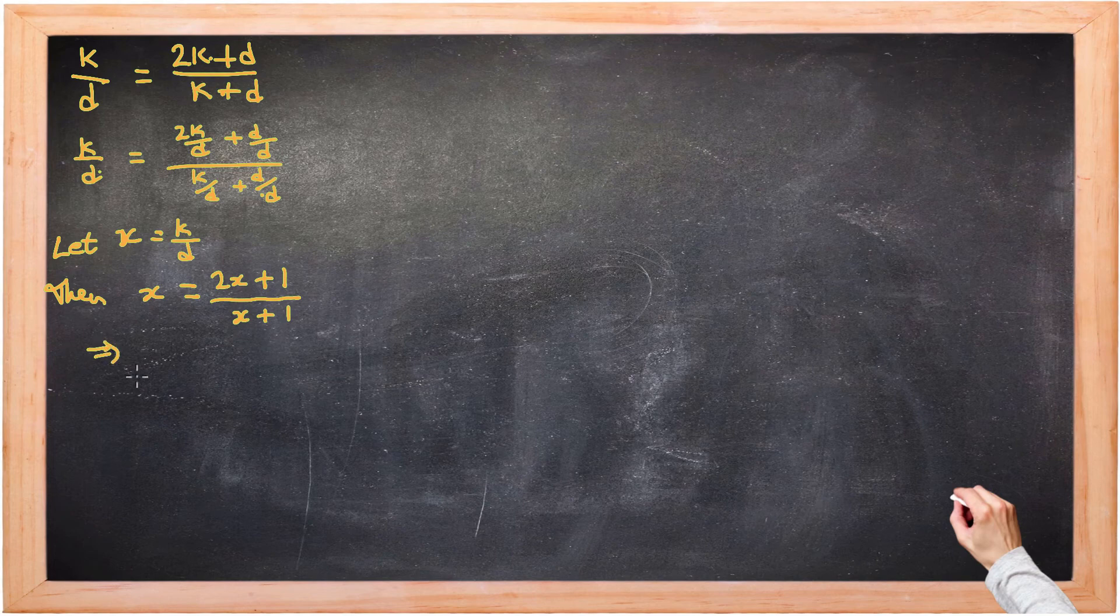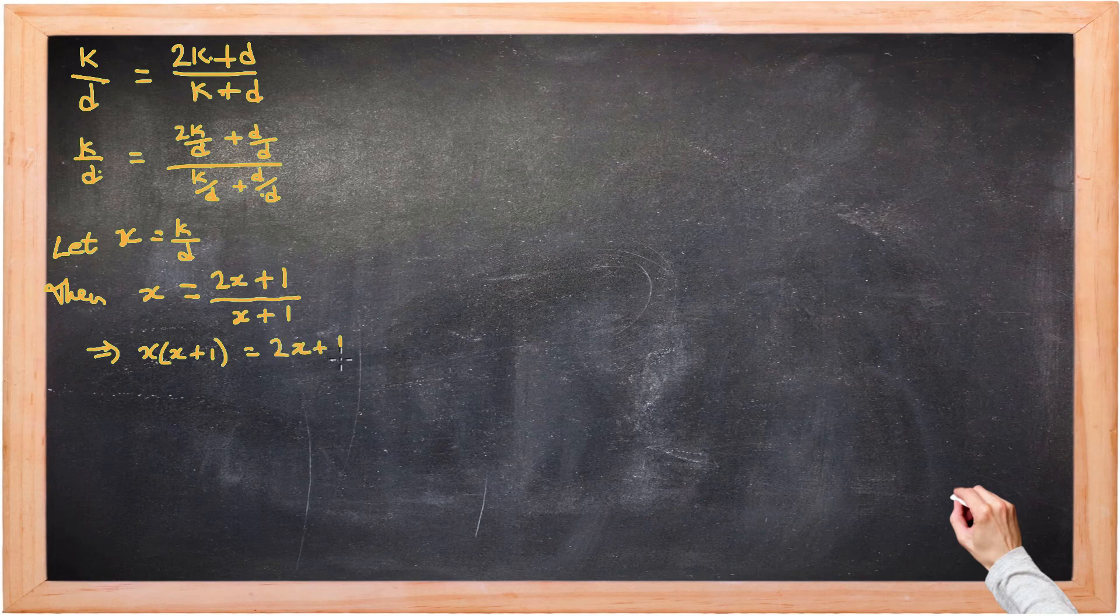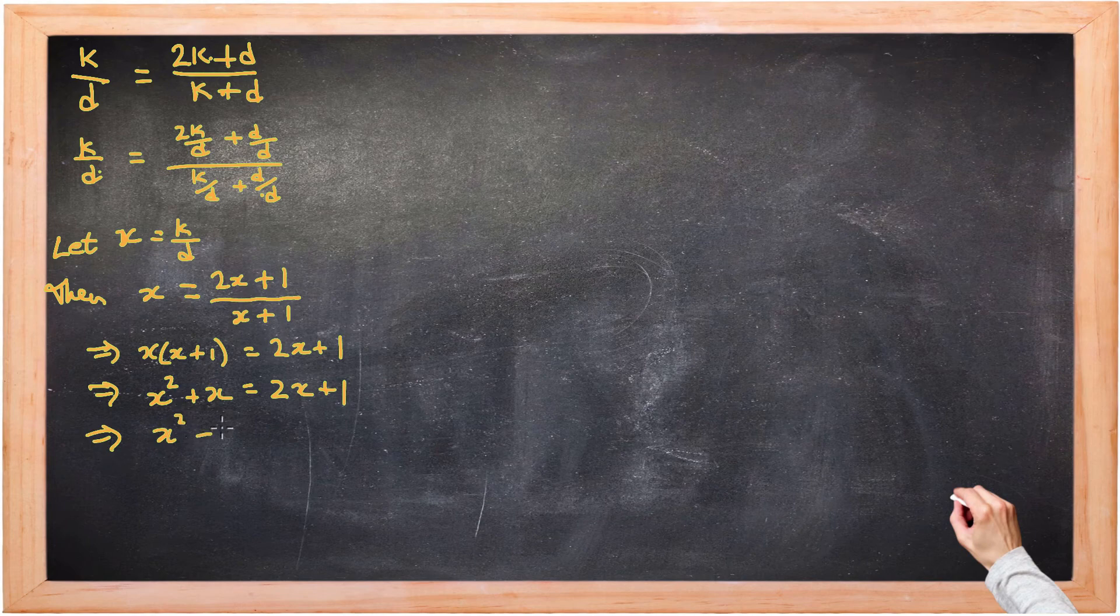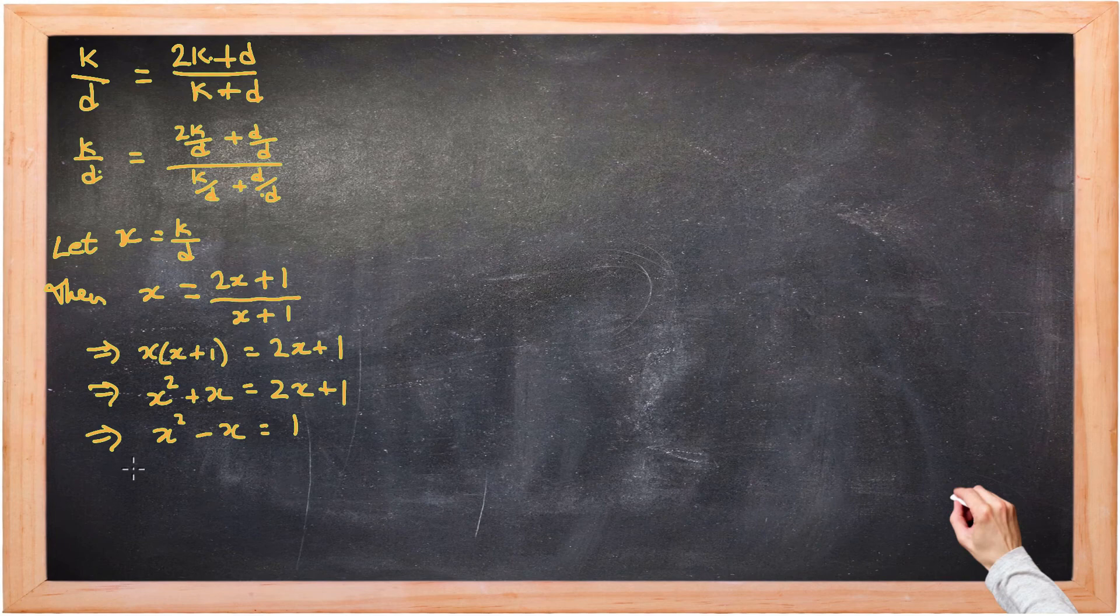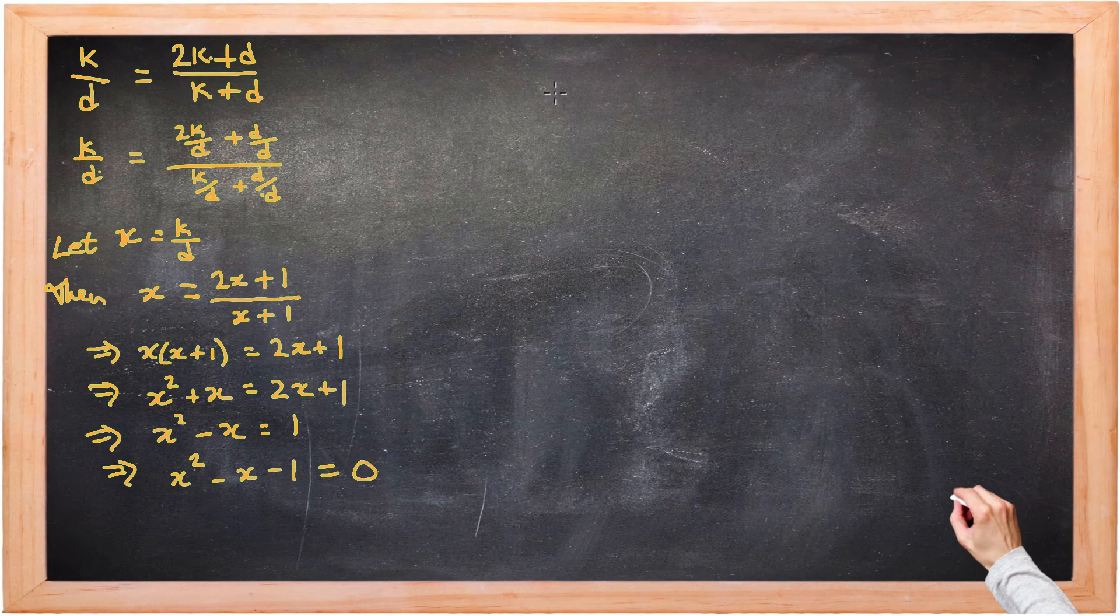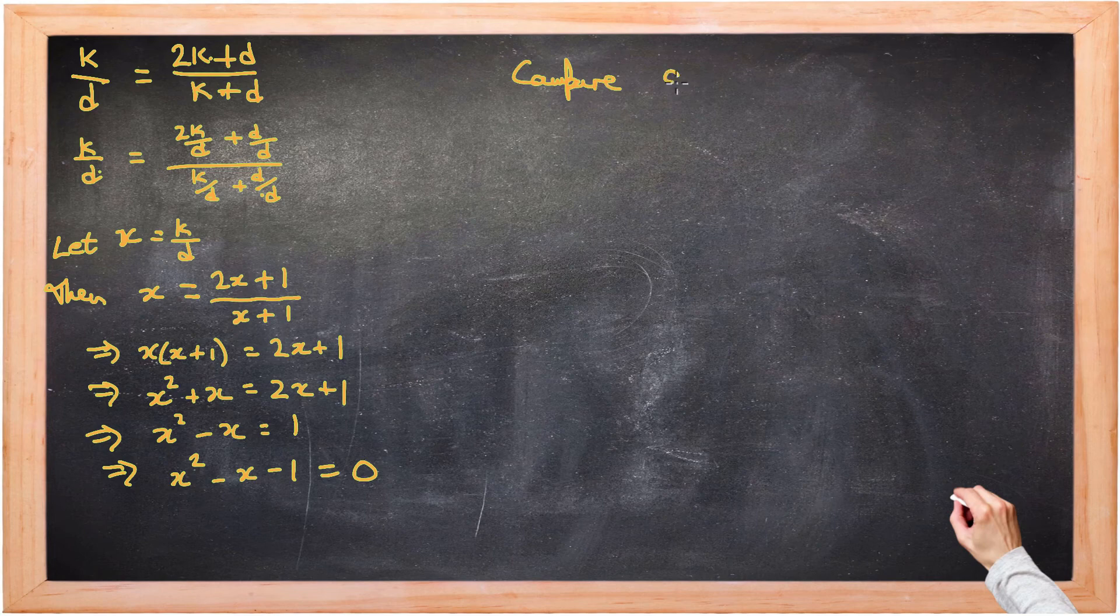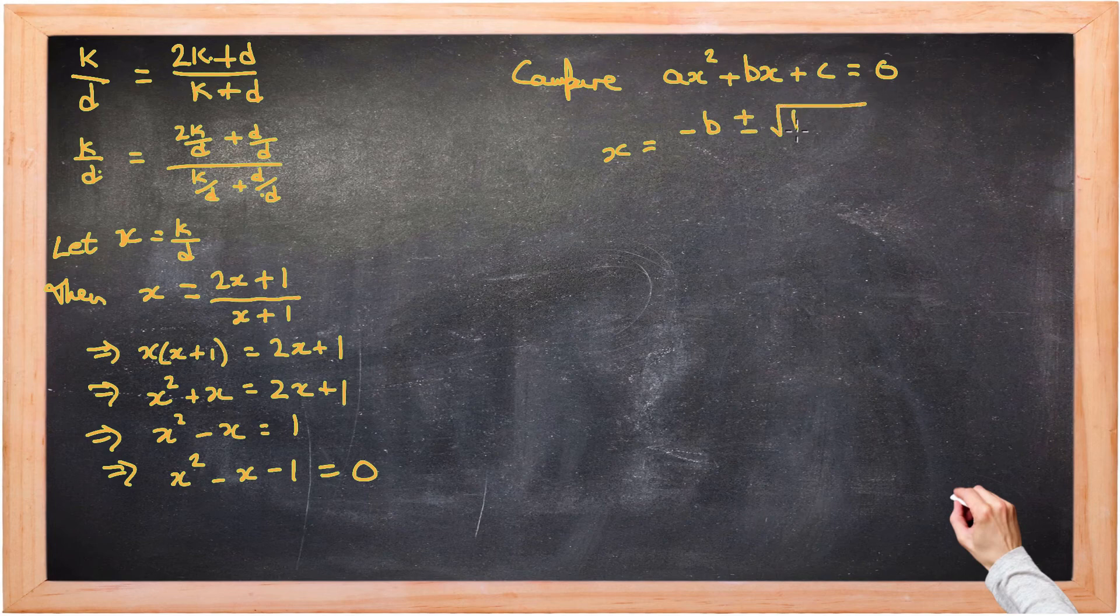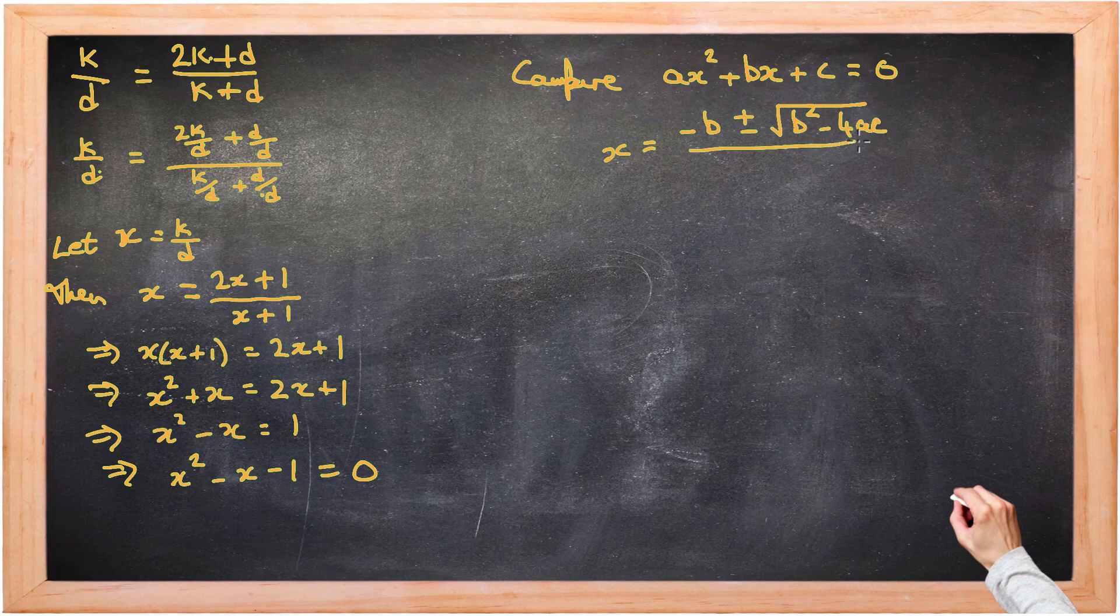And then we can proceed multiplying both sides by x plus 1. Gets rid of that fraction. Multiply out the brackets. Subtract 2x from both sides. Subtract 1 from both sides.